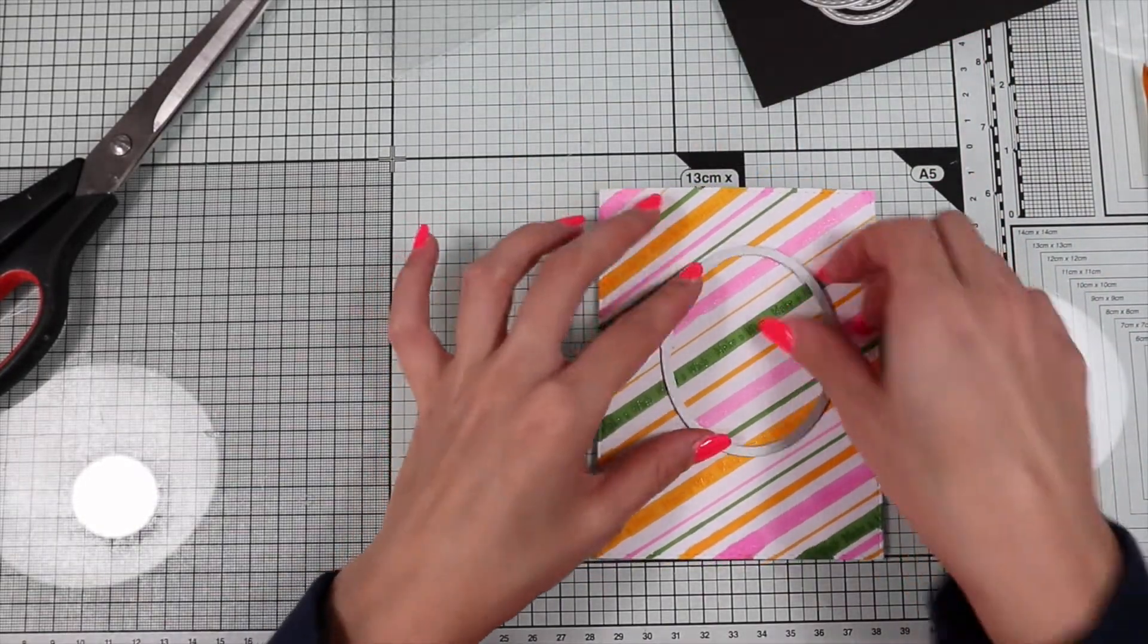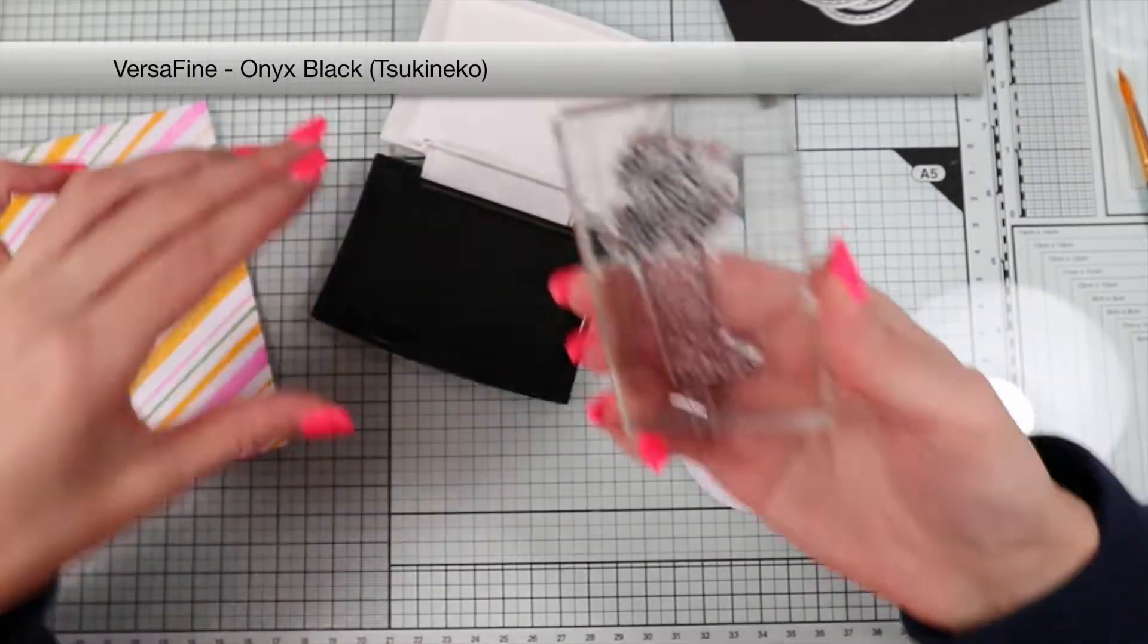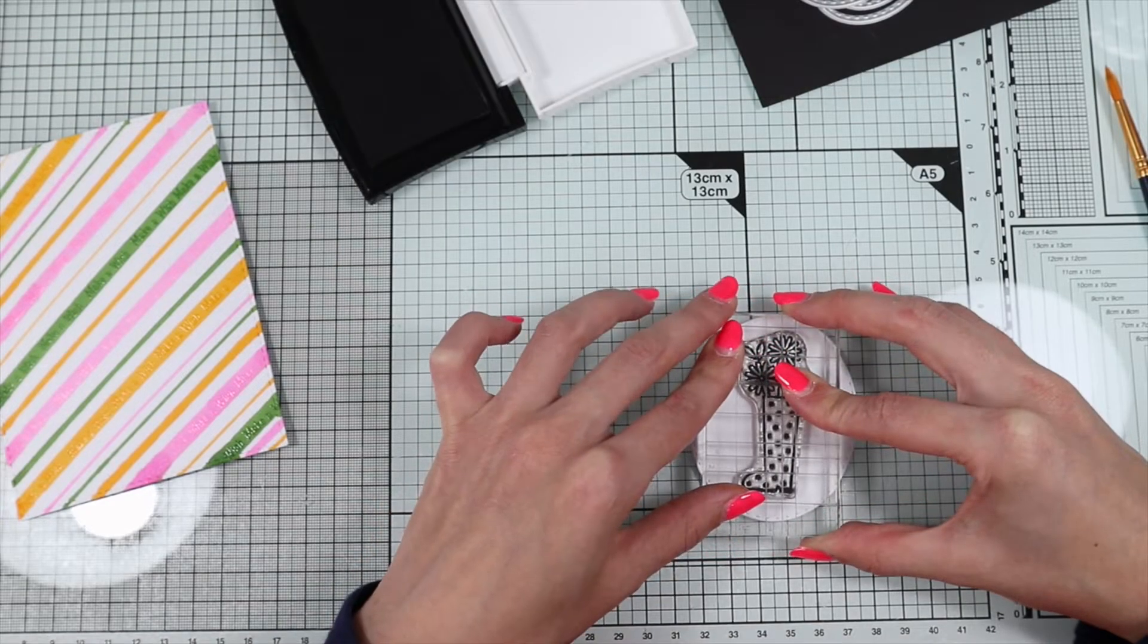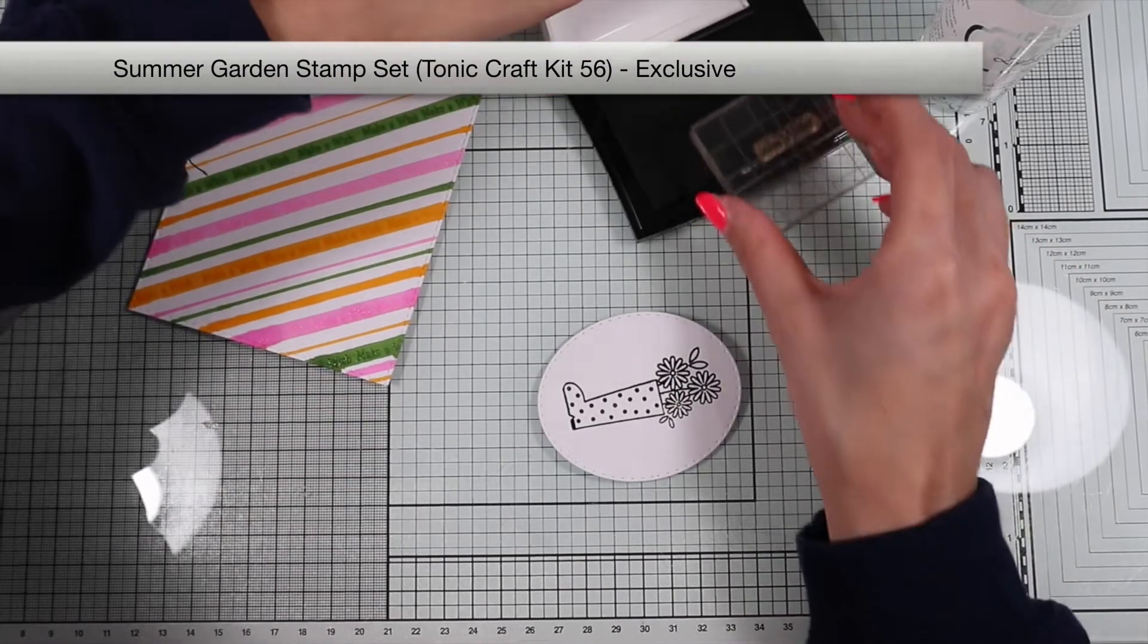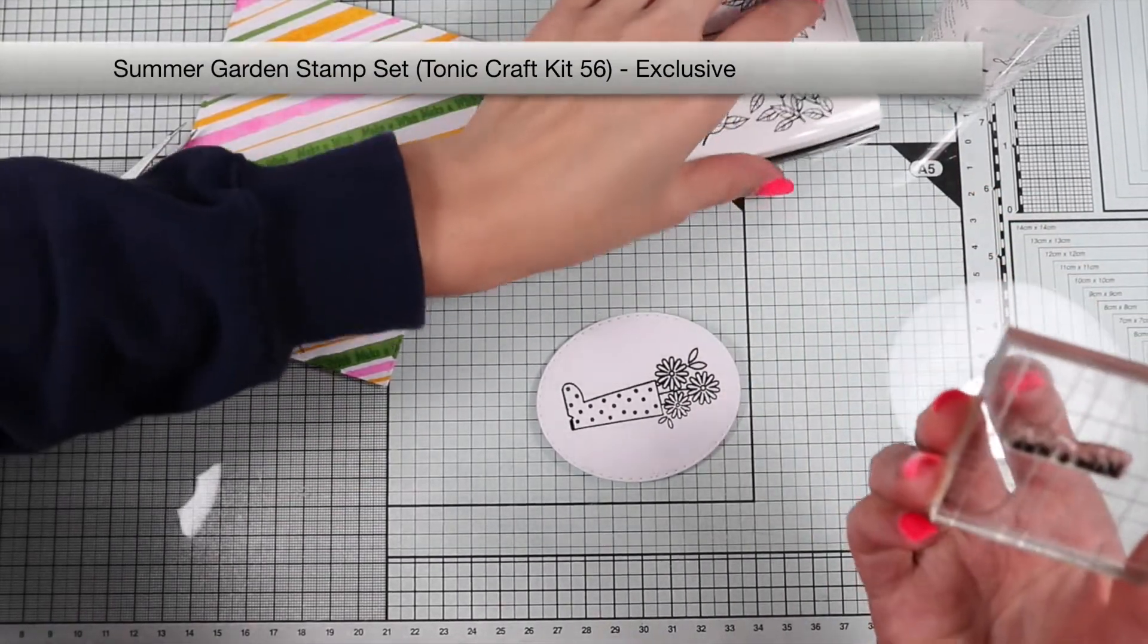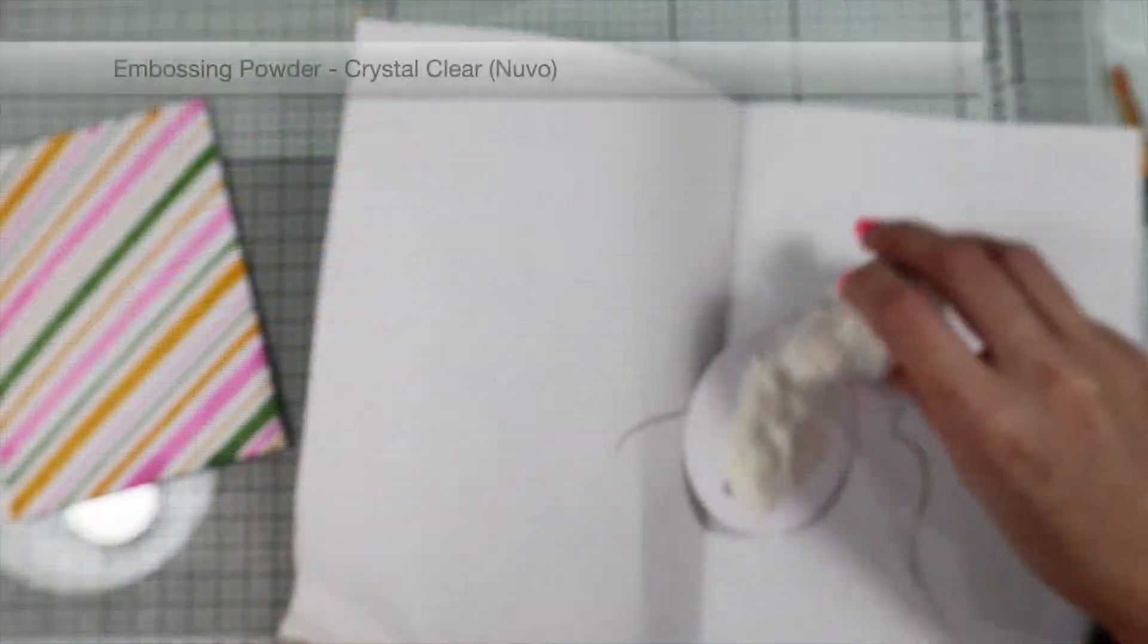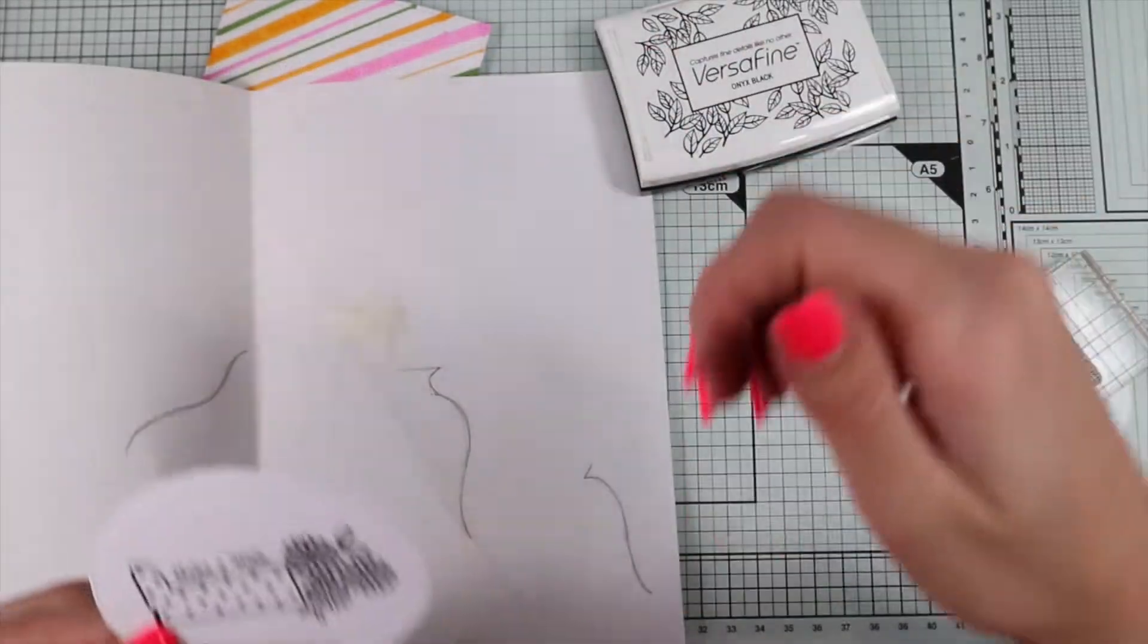So I'm going to die cut an oval on white cardstock, on which I stamp one of the stamps of the kit using the Versafine Onyx Black, as well as the Make-A-Wish sentiment I used earlier for the background. Of course, I'm going to emboss the stamps with clear embossing powder.